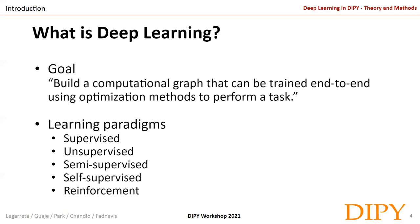Deep learning has replaced this with a cascade of modules, all of which are trainable end-to-end using an optimization strategy. We feed the system raw inputs, and by appropriately designing the cascade of modules, these modules not only learn to achieve the end goal but also learn to produce appropriate internal representations and features — finding underlying patterns in the data and minimizing assumptions.